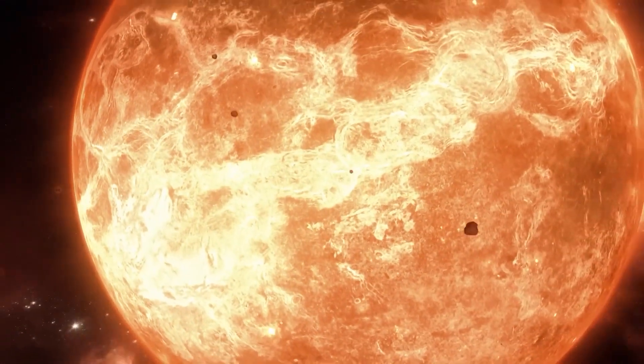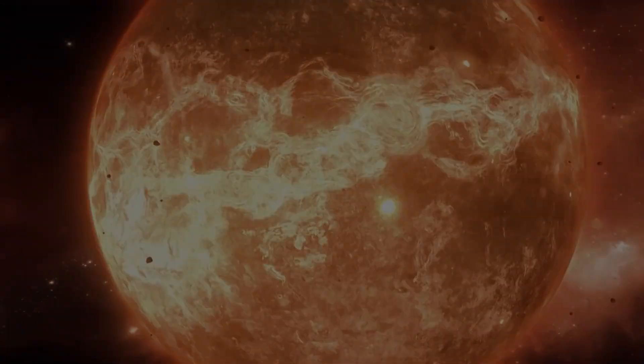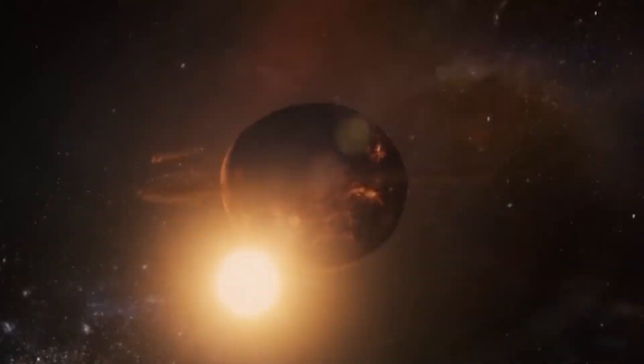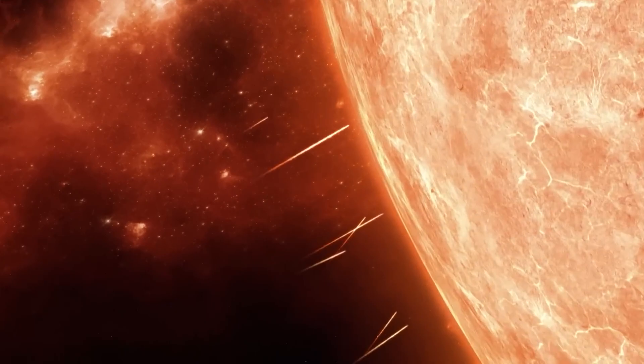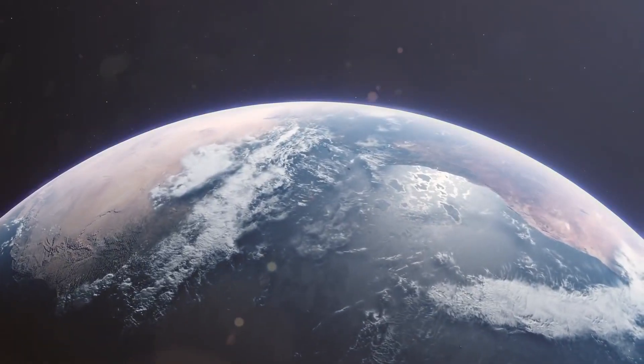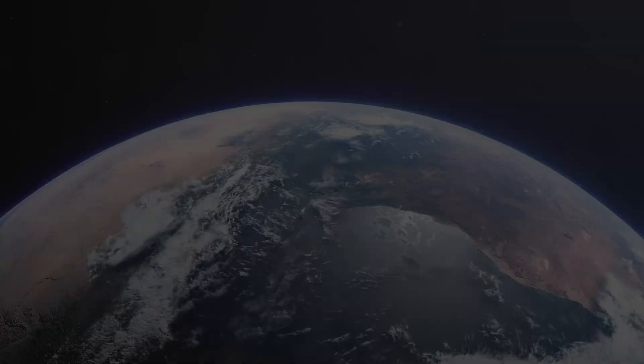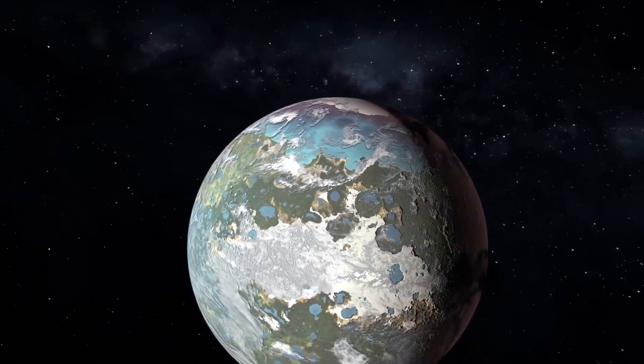The sky glowed from constant volcanic eruptions. Ash darkened the sun. And lightning tore through the clouds in endless storms that lasted for centuries. This was Earth during the Hadean Eon, named after Hades. For good reason.